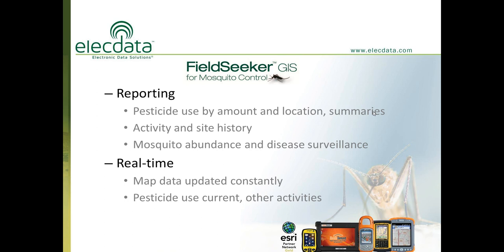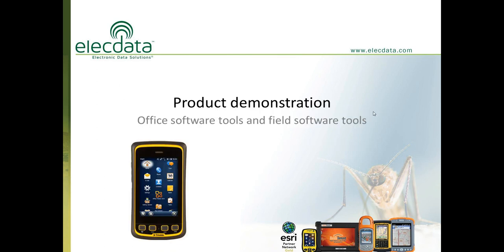Reporting is a standard staple of FieldSeeker GIS. The software uses SQL Server Reporting Services, which allow customers to quickly design their own report templates to meet their reporting needs. This includes pesticide use by amount and location, summary treatment reports, activity reports, site history reports, mosquito abundance reports, and disease surveillance. Because this is a web-based solution, it provides real-time updated maps constantly in the office and in the field, as well as all operational information for pesticide use and other activities.